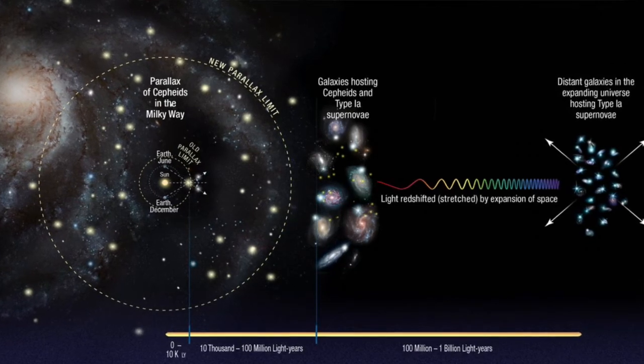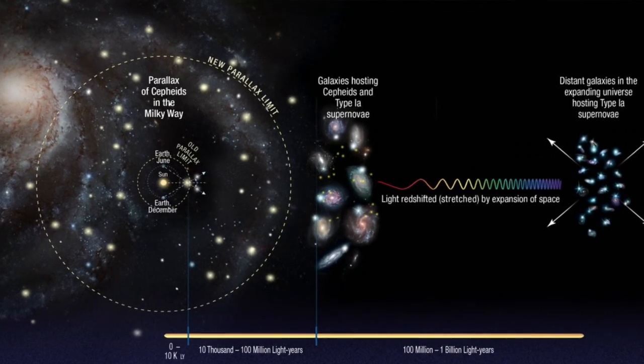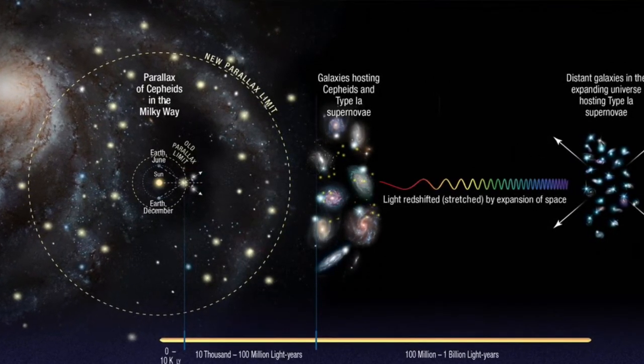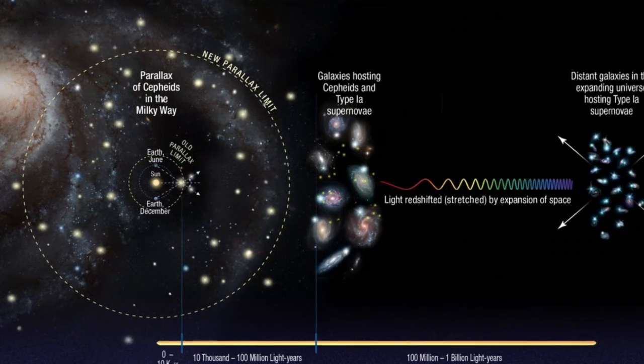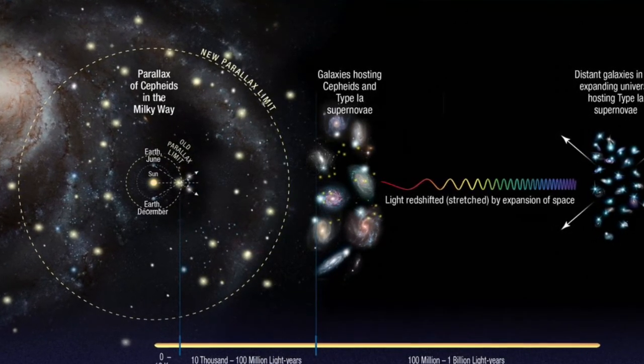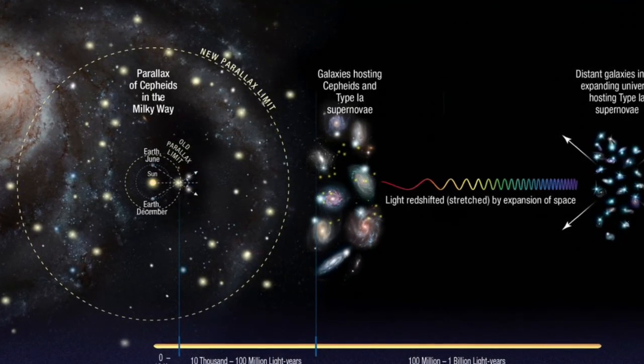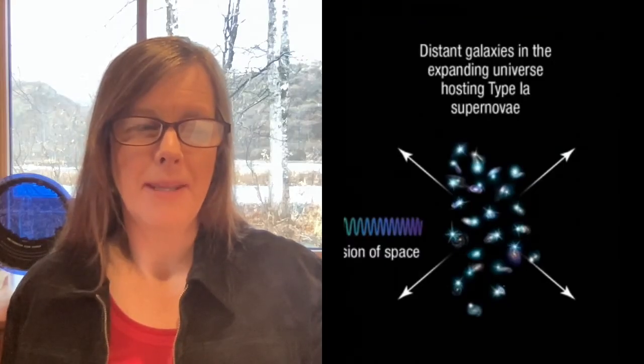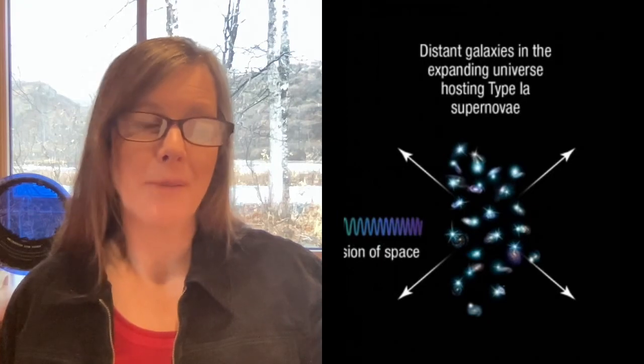And if you know the distance, you know the apparent brightness, and from that you can determine the absolute magnitude. Now there are many types of standard candles today, including the rare Type Ia supernova. But the idea is the same — you know the absolute luminosity of the celestial object, and from that you can figure out the distance.